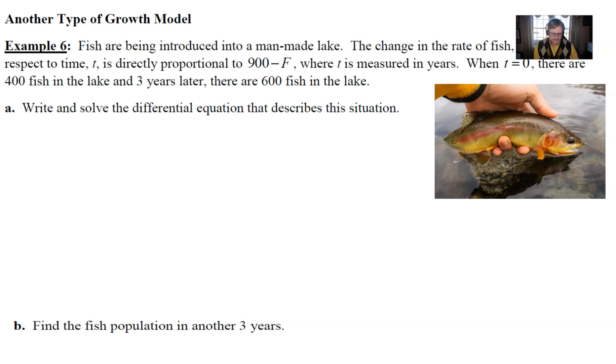It says that fish are being introduced into a man-made lake. The change in the rate of fish F with respect to time t is directly proportional to 900 minus F. And that is where the problem differs from our normal differentiation growth decay model. t is measured in years. At time zero, there are 400 fish. And three years later, there are 600 fish.